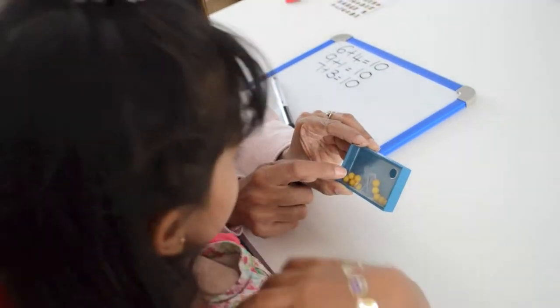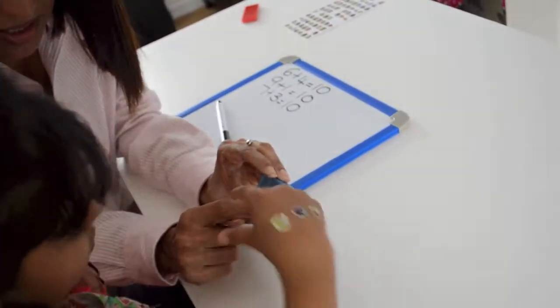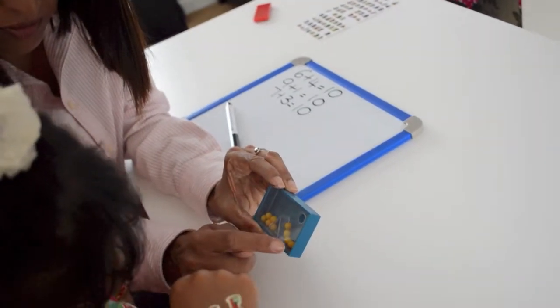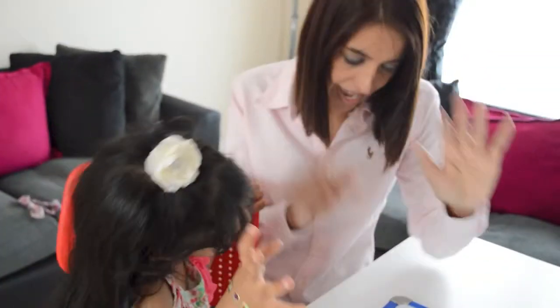Right, so do you want to show that one? One, two, three, four, five. So five on that side. One, two, three, four, five. So five on that side. So... It still makes ten. Five and five still makes ten. Well done.